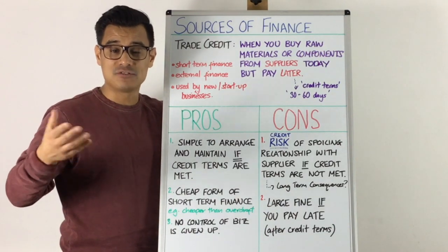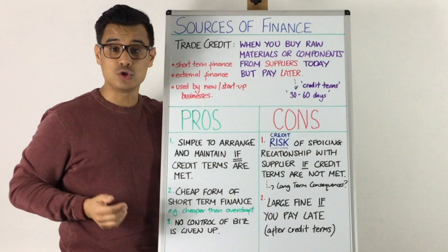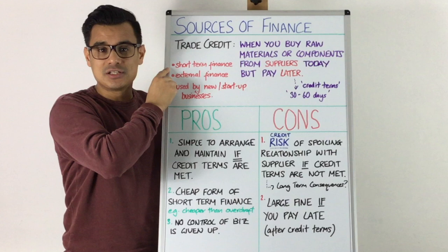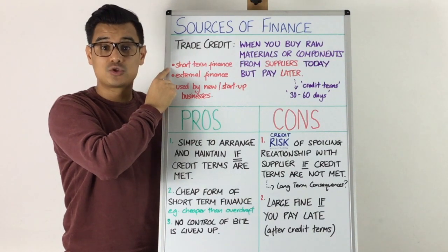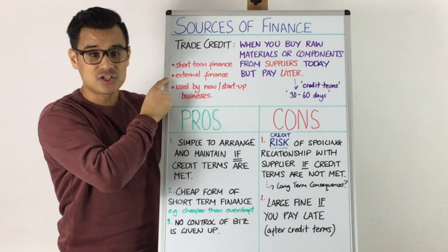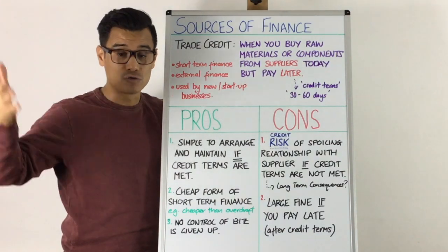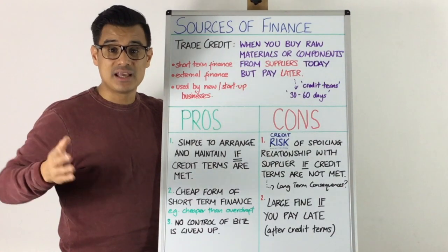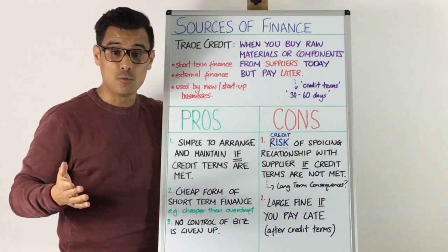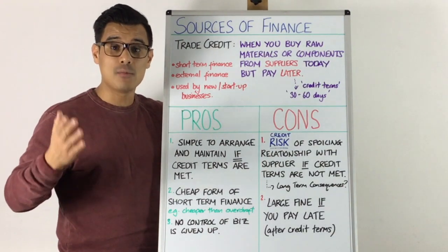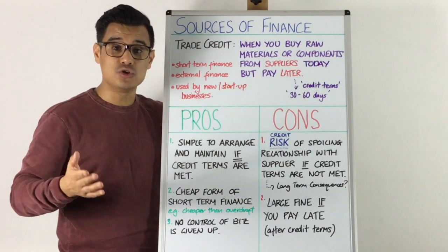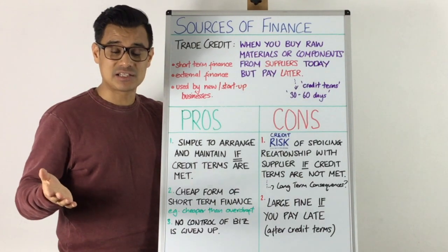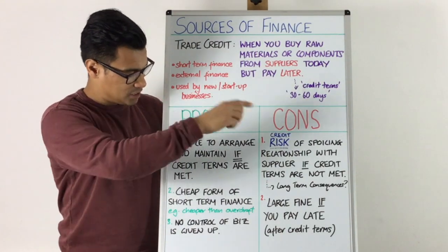This is known as the credit terms — the number of days you have to repay your supplier. Trade credit is a short-term source of finance, it's external finance because it comes from your supplier, and it's used by new and startup businesses. It's probably the most common short-term source of finance for startups, but it can also be used by established businesses.